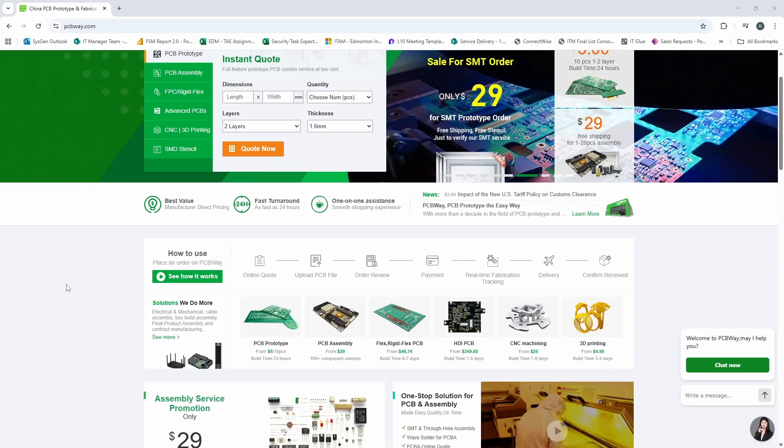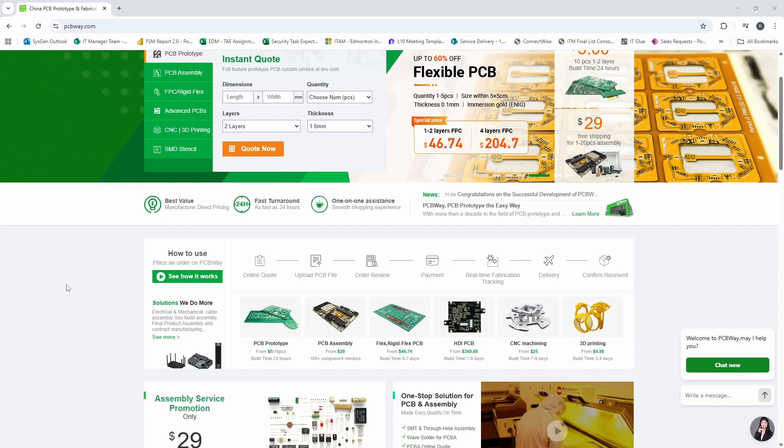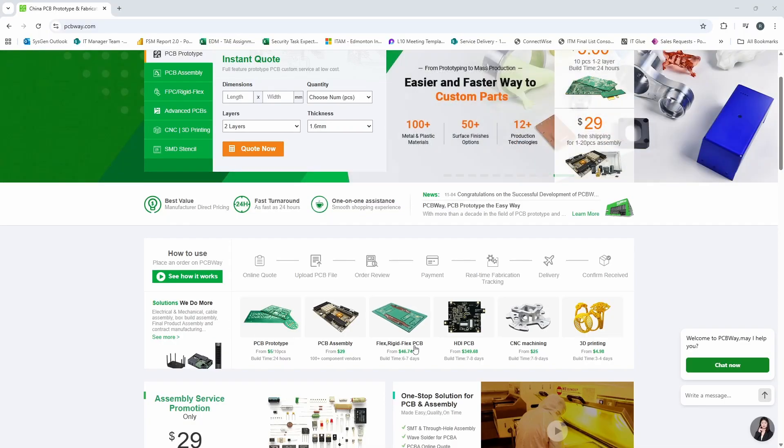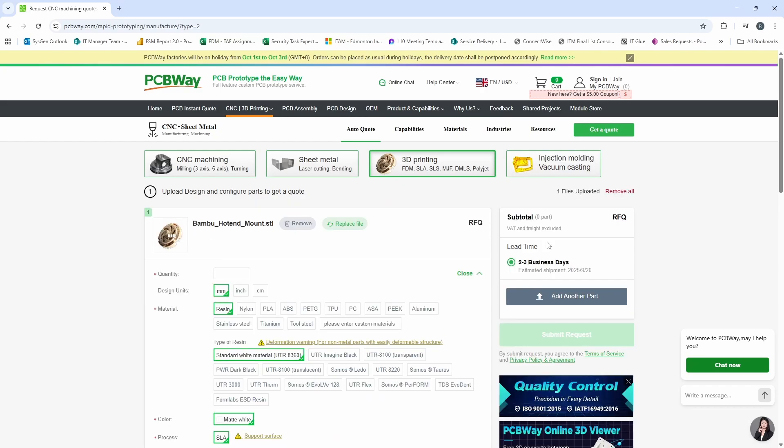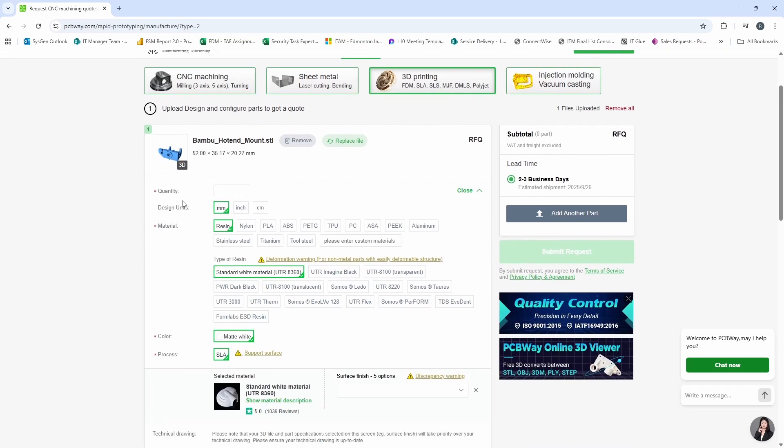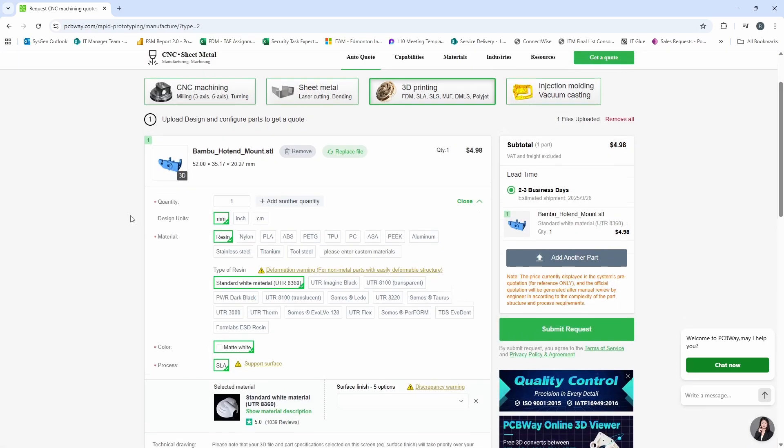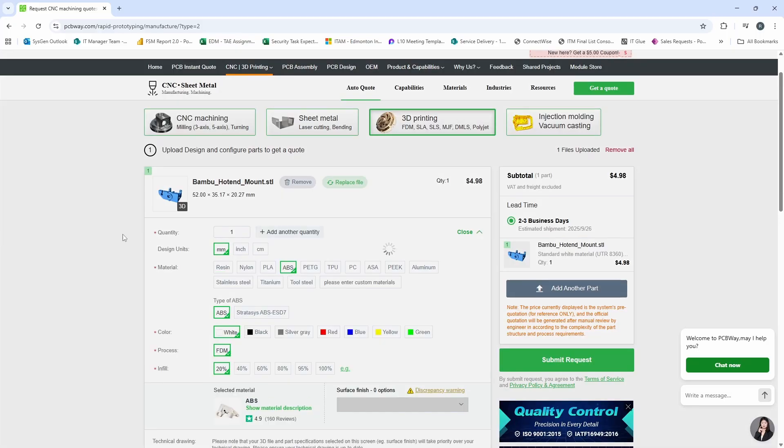PCBWay doesn't just do PCBs. They do CNC machining, 3D printing. They do flexible and rigid PCBs. Let's go ahead and try out some 3D printing here. Let's take one of the files from Delta Flyer. This is the bamboo hot end mount for Delta Flyer. Let's add a quantity of one. We're of course, let's set this to green and choose 40% infill. You can see here we have our price on the right hand side and we can go ahead and order that 3D printed part.